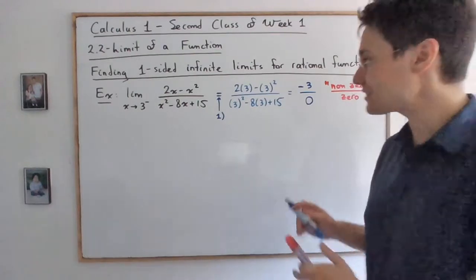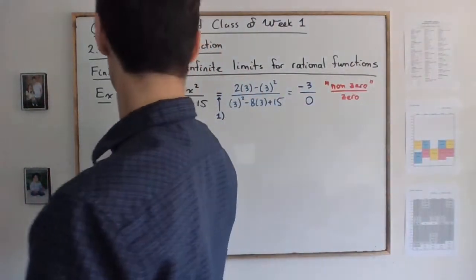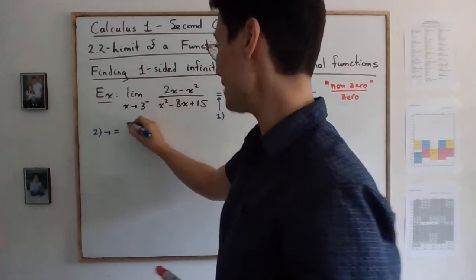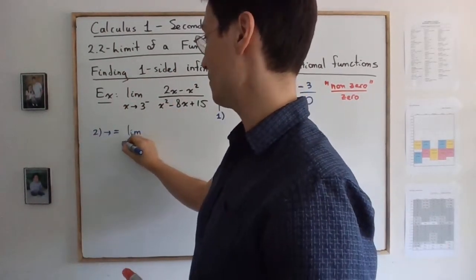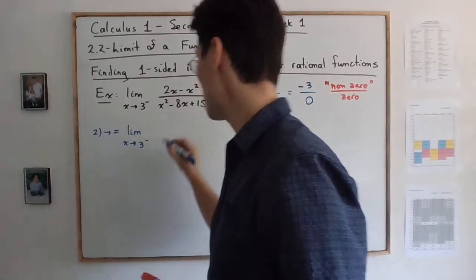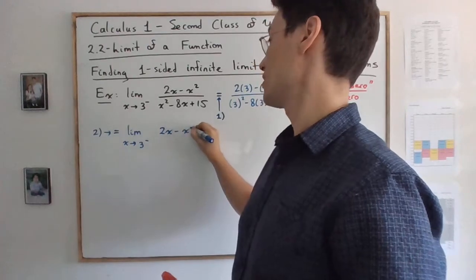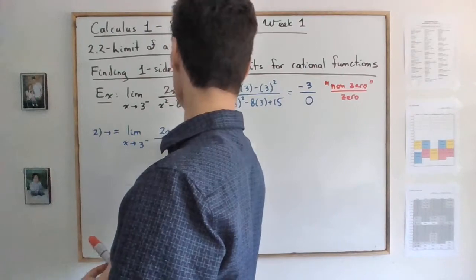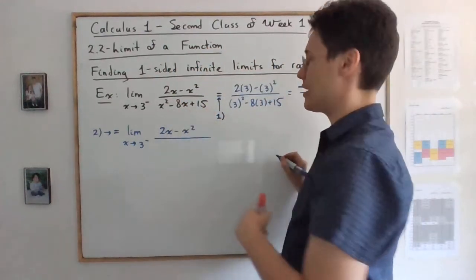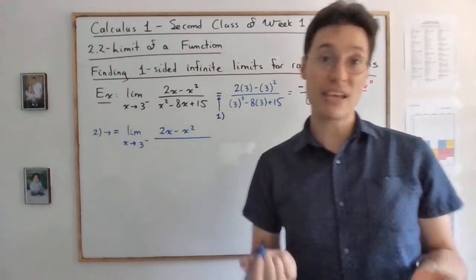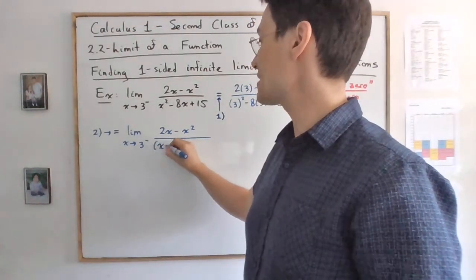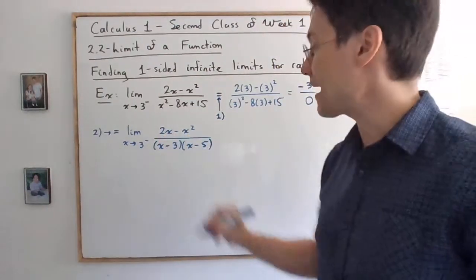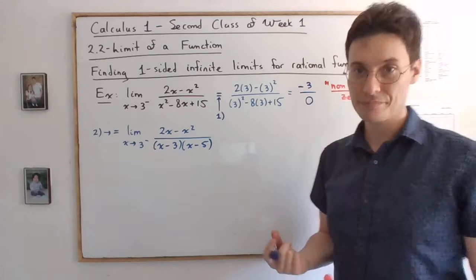And the next step, remember, is to factor the denominator. So right here, I'm doing step number two. So I write the limit as x is approaching 3 from below. The numerator, there's no point factoring it. You could, but it's not helpful. So what you really want is to factor the denominator. And the denominator, you probably remember, monic factoring. So x minus 3 times x minus 5 is the correct factoring of this denominator.